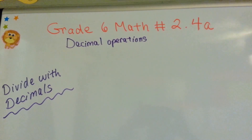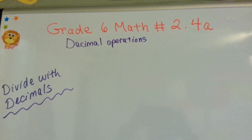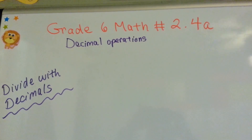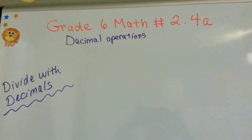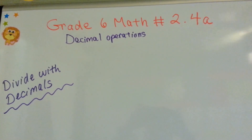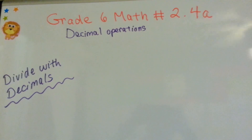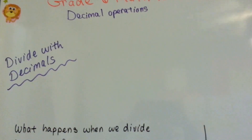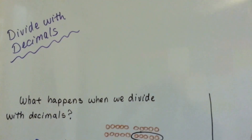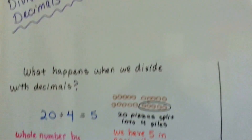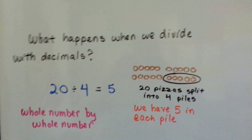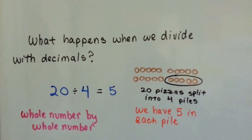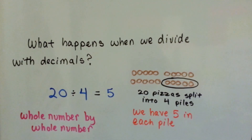Grade 6 math, number 2.4a. There's going to be a 2.4b. I wanted to make this one before I made the dividing with whole numbers to explain to you what happens when we divide with decimals. So, this is what happens when we divide with decimals.